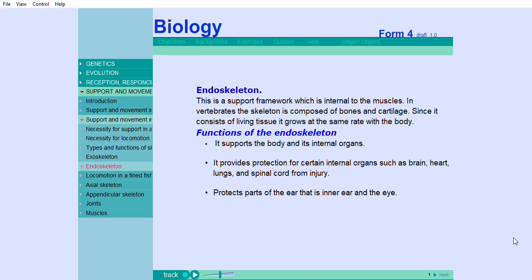Functions of the endoskeleton: It supports the body and its internal organs. It provides protection for certain internal organs such as brain, heart, lungs, and spinal cord from injury. It protects parts of the ear, that is, the inner ear, and the eye.